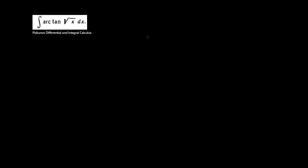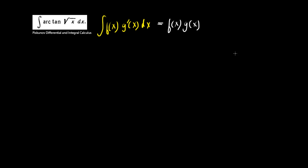I'll just remind you of the formula for integration by parts. If I have the integral of some function f(x) times the derivative g'(x) dx, then according to the formula that equals f(x) times g(x) — the product of the two functions — minus the integral of f'(x) times g(x) dx.